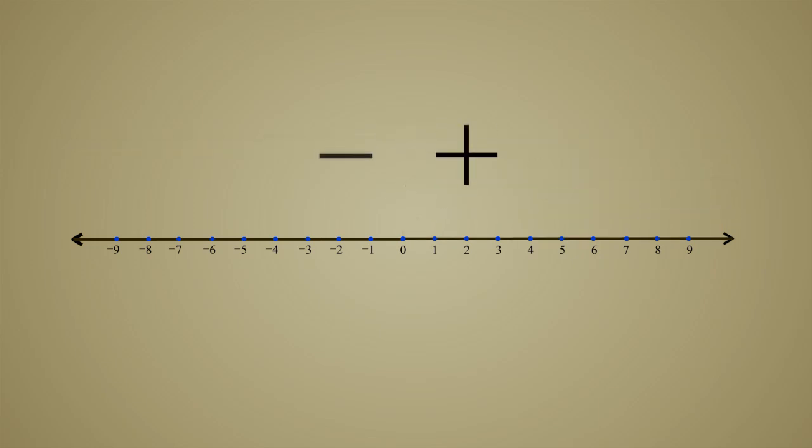With a positive or negative sign, a number can be thought of as representing not only a distance but also a direction. Just as a positive number can be thought of as representing a distance to the right of the origin, a negative number can be thought of as representing a distance to the left.